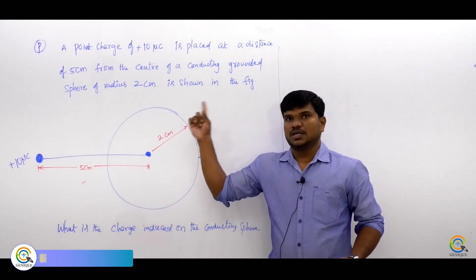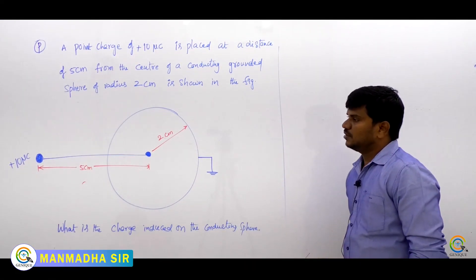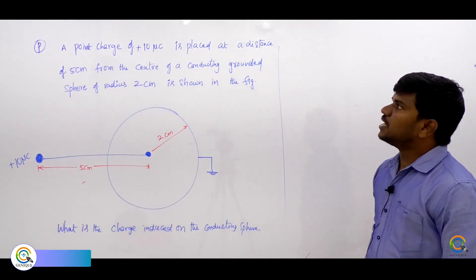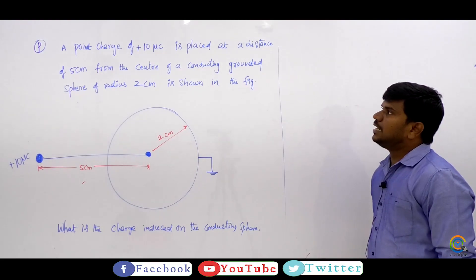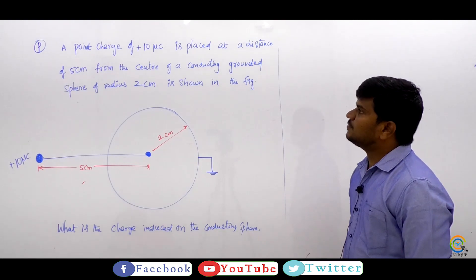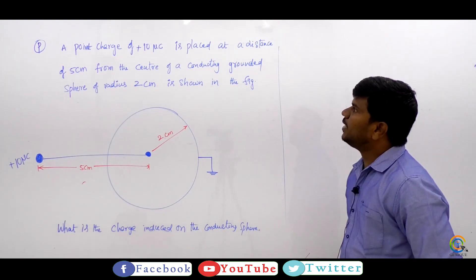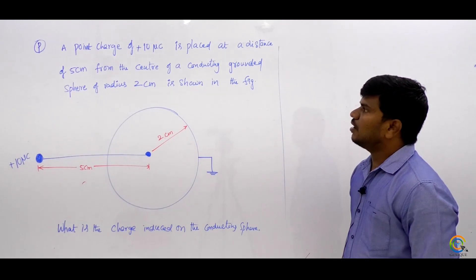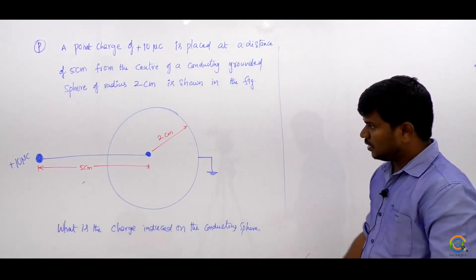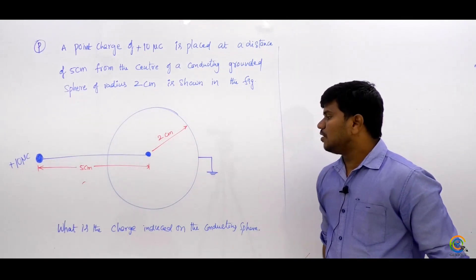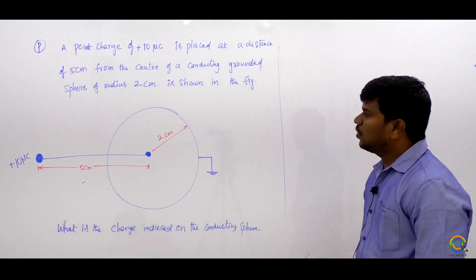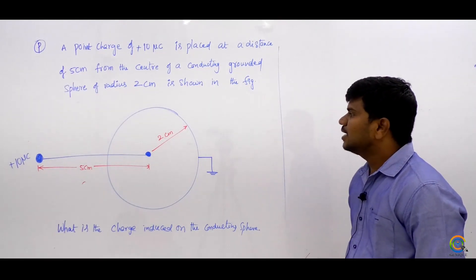Welcome. This is the next question. Observe this question: A point charge of plus 10 microcoulombs is placed at a distance of 5 centimeters from the center of a conducting grounded sphere of radius 2 centimeters, as shown in the figure. What is the charge induced on the conducting sphere?